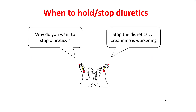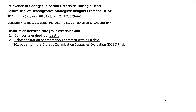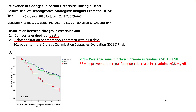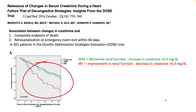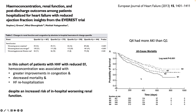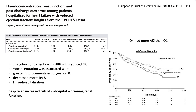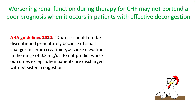Most physicians will stop the diuretic if creatinine is worsening. However, when looking at patients from the DOSE trial, those with worsening renal function defined by creatinine increasing more than 0.3 mg/dL performed much better compared to patients who had improved renal function during admission. Similarly, when following patients from the CARRESS trial, patients who developed more AKI during admission had better outcomes.